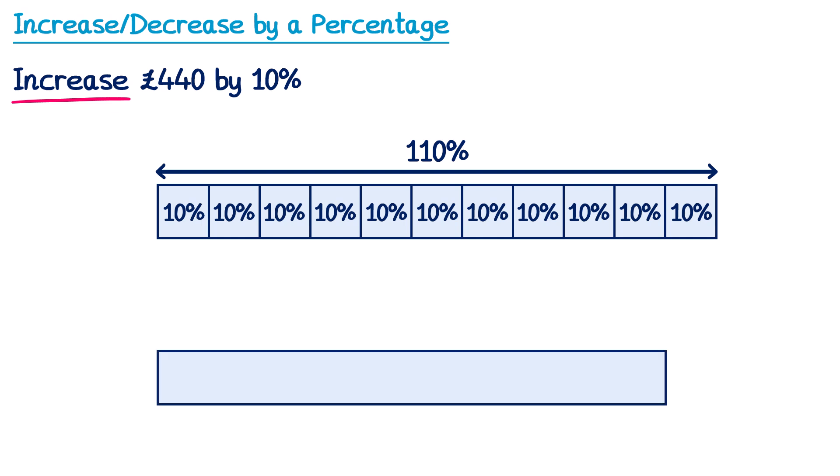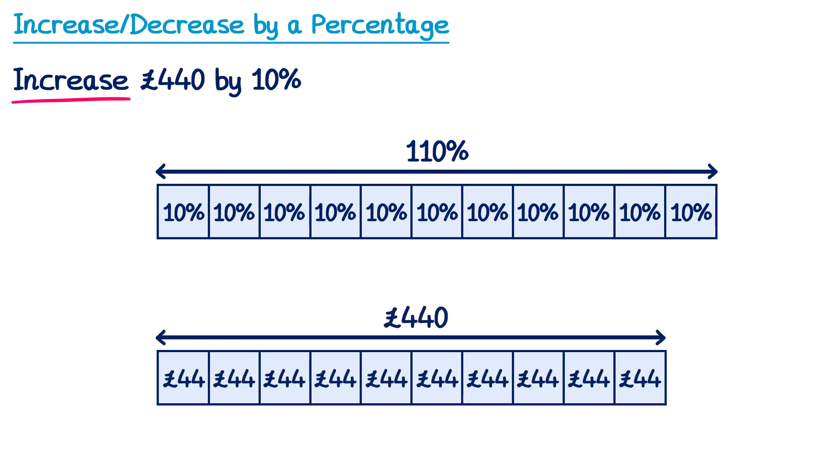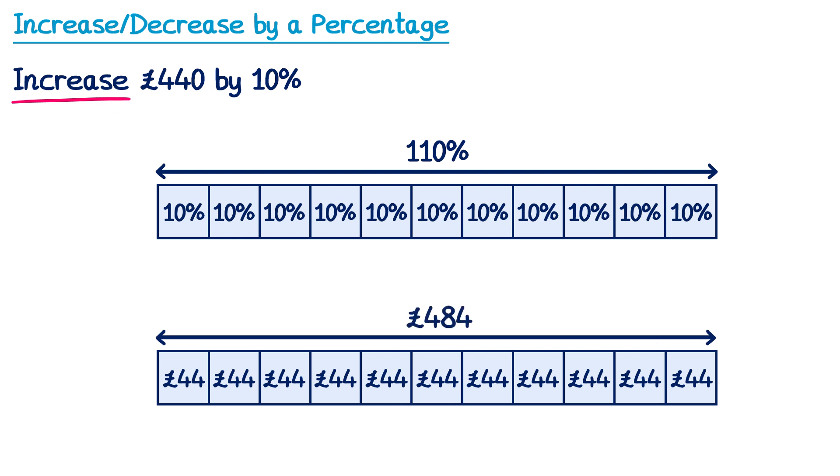Now let's do the same idea with the £440. Imagine this bar represents all £440. If we divide it into 10 equal size pieces, we'd have £44, since 440 divided by 10 is 44. Each £44 represents 10%, so if we want an extra 10%, we want an extra £44. Adding all of this up, we'd have a total of £484, and that would be the answer.